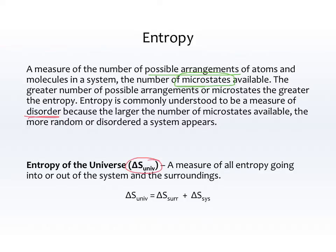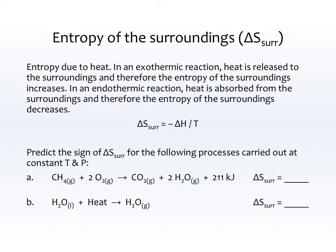The entropy of the universe is a measure of all the entropy going into or out of the system and the surroundings. The universe is just equal to the surroundings plus the system. So what are the surroundings? The entropy of the surroundings, delta S surroundings, is entropy due to heat — pretty much entropy due to delta H.